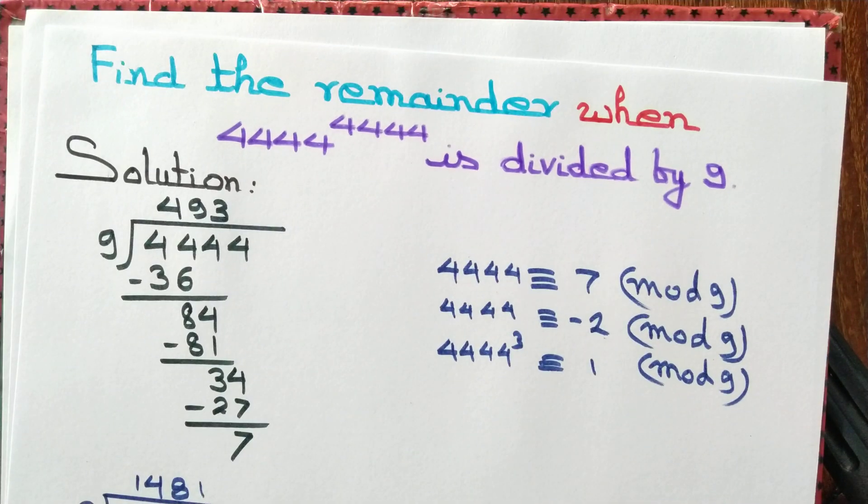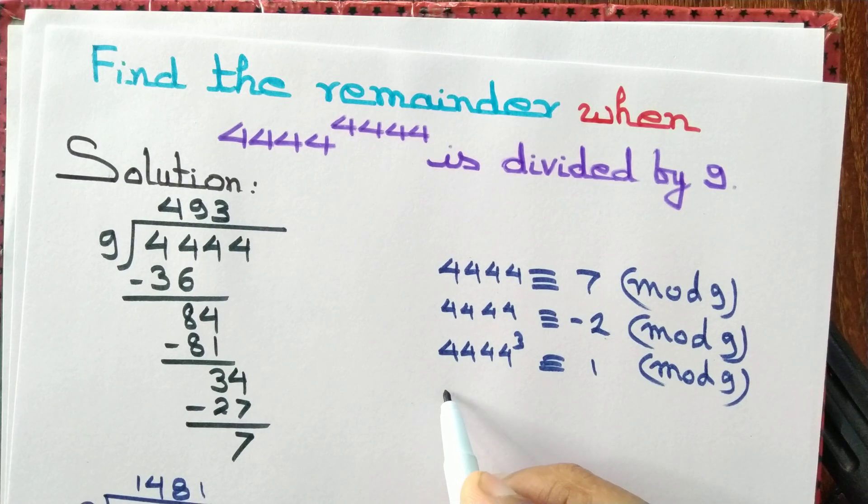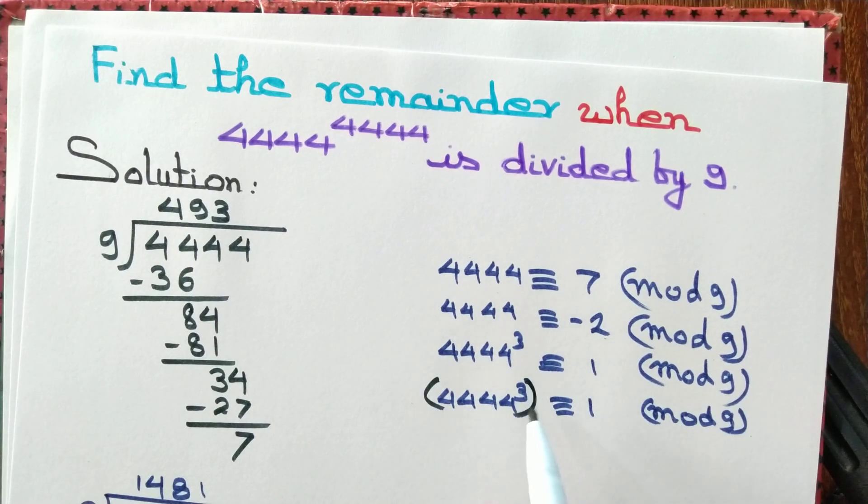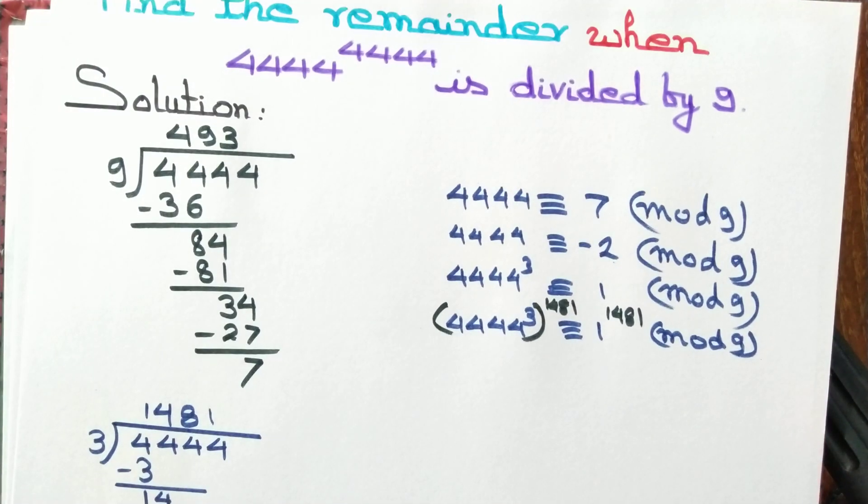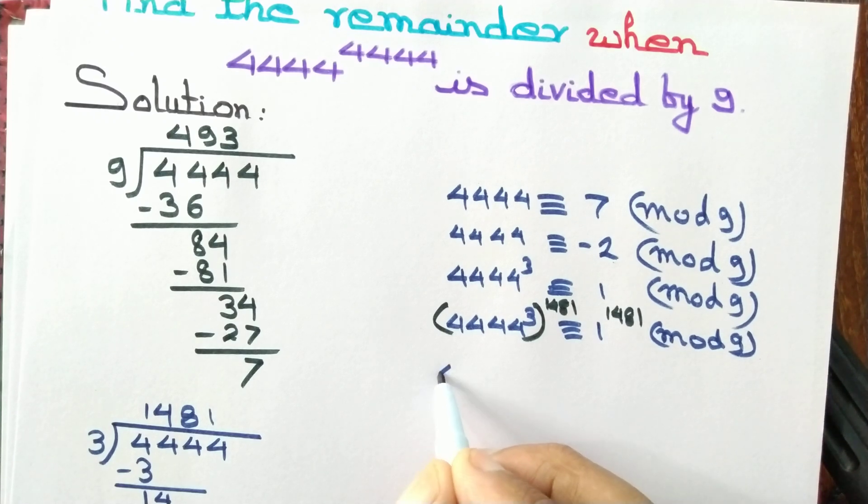So we raise both sides to the power 1481. We raise left hand side to the power 1481 and also the right hand side. That gives us 4444 to the power...